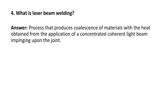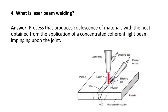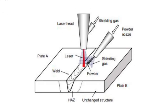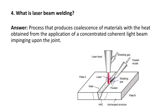Next question: what is laser beam welding? It is a process that produces coalescence of materials with the heat obtained from the application of a concentrated, coherent light beam impinging upon the joint. In this welding, a concentrated light source is impinged on the surface to develop heat, the material melts, and then gets joined. That is known as laser beam welding.